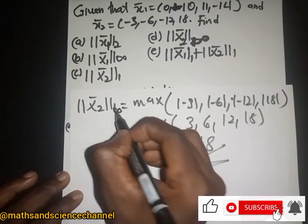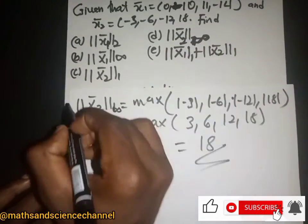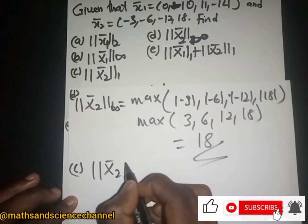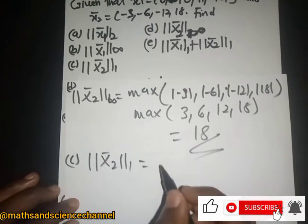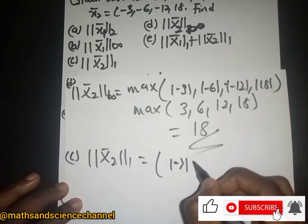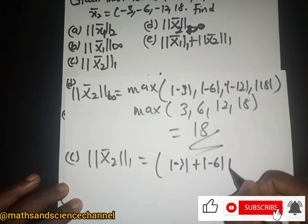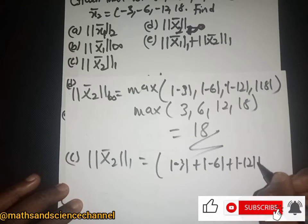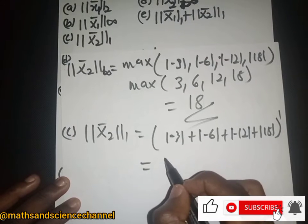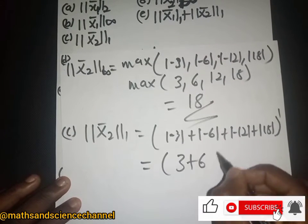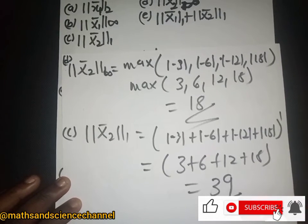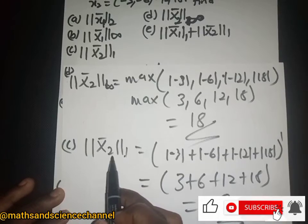Actually, what we just did was the infinity norm, so let's call that part D. Going back to part C, we find the 1-norm of x2. We take the absolute values of -3, -6, -12, and 18, giving us 3 plus 6 plus 12 plus 18, which equals 39. So the 1-norm of x2 is 39.